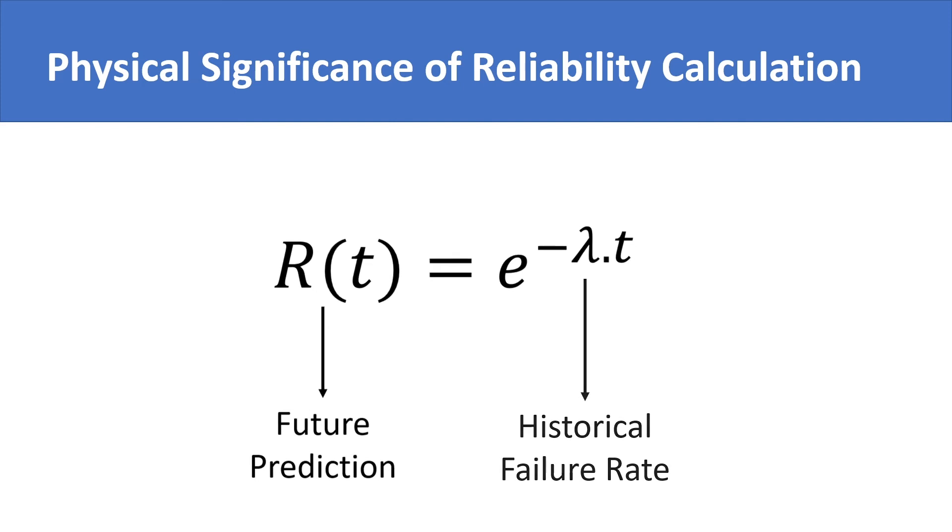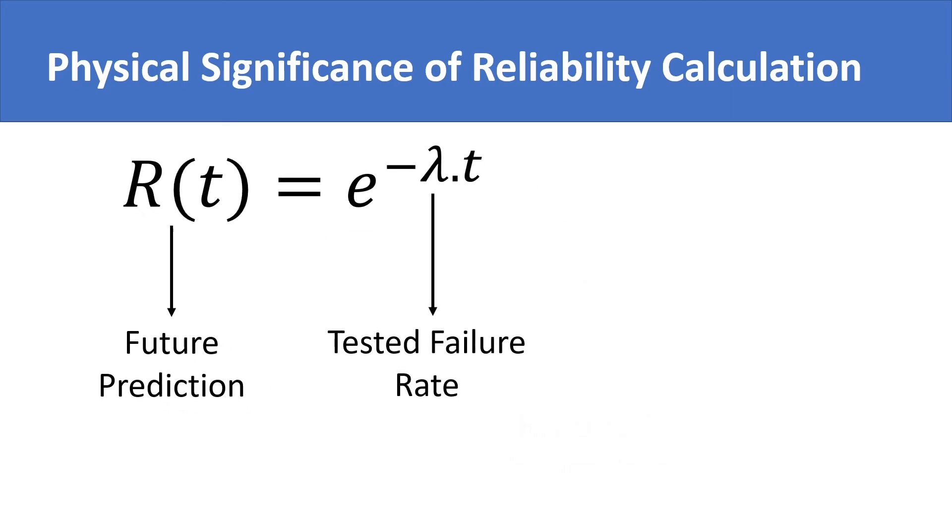Many companies plug in the tested failure rates of machines to ascertain their reliability over time. It allows them to find what is the ideal time they should warrant their product for. They select a time duration in which the machine has high reliability, otherwise they might get too many warranty claims which may not remain financially viable.